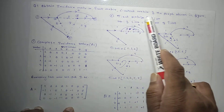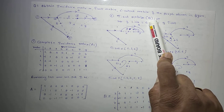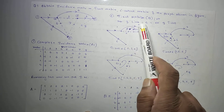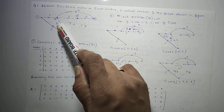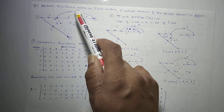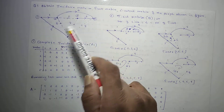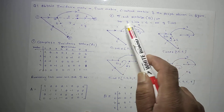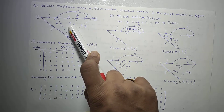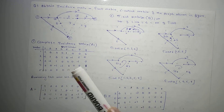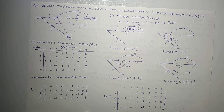The second matrix is the tie-set matrix. The number of tie sets equals the number of links. This graph has 4 links, named 2, 6, 7, and 8. So this graph has 4 tie sets — 4 fundamental loops. The name of each tie set is the name of its corresponding link.